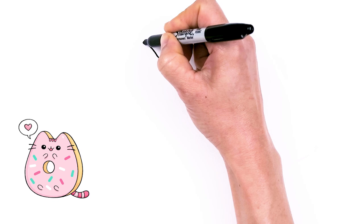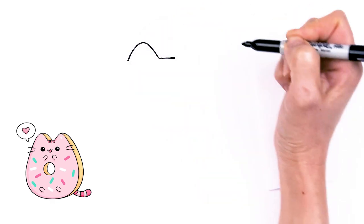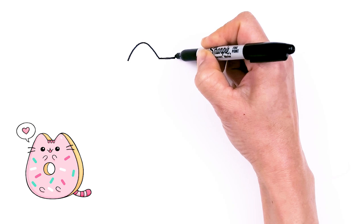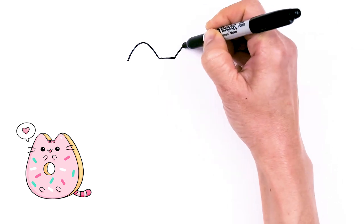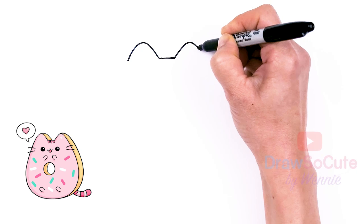So angle this and then round it off and come down. Same thing on this side. Go up and about right here, come down.